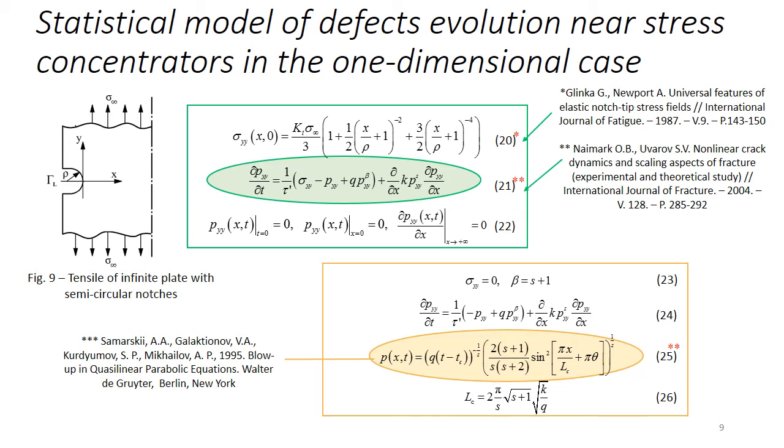P_yy is the component of the structural deformation tensor. β and s are the degrees of polynomials characterizing the generation and diffusion rate of defects. Equation (21) in the case σ_yy equals 0 has the form (24) and with the ratio of exponent β equal to s+1, its analytical solution has the form (25), which depends on the fundamental length L_c. In the case of analysis of structural deformation evolution in an inhomogeneous stress field, relation (26) can be considered as an approximate estimate for dissipative structures described by relation (21).